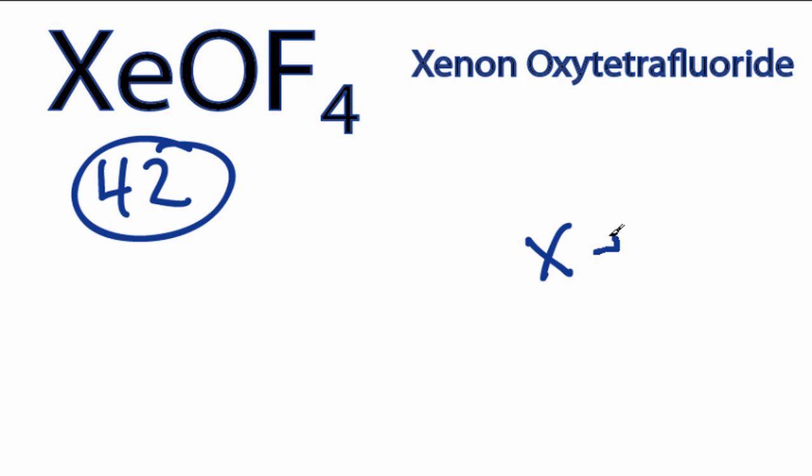We'll put the Xe in the center and around it. We'll put an oxygen here, and then we have four fluorines.